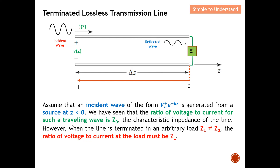However, one unique case occurs when the line is terminated in an arbitrary load ZL which is not equal to the characteristic impedance Z0. The ratio of voltage to current at the load must be ZL. So at that point the impedance must be ZL, but since ZL is not equal to Z0, I conclude that there will be a reflected wave. If there were no reflected wave, Z0 would equal ZL — but because they are not equal, a reflected wave must exist.